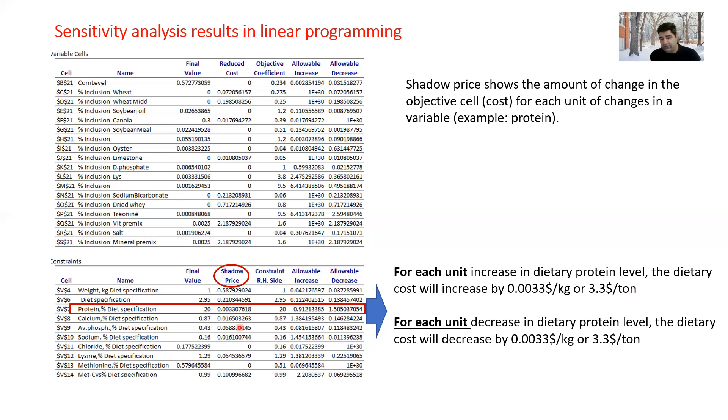It means that if the protein level goes down by 1 percent, then my dietary cost would decrease by $3.3 per ton. But there is a range for this shadow price. The range is allowable increase and allowable decrease.